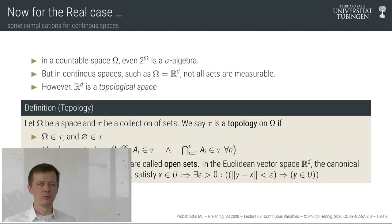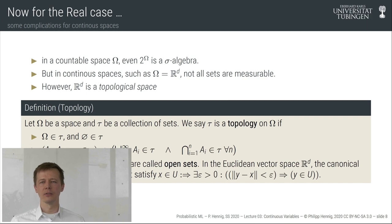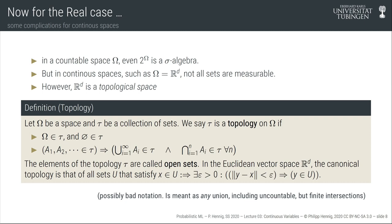One canonical way to construct sigma algebras on continuous spaces works on topological spaces — spaces that allow the definition of open sets. A topology on a space omega is a collection of sets that contains both the entire space and the empty set, and for all its elements, potentially infinite unions and finite intersections are also in the topology.